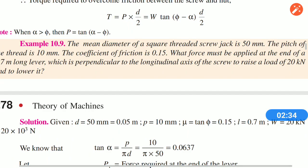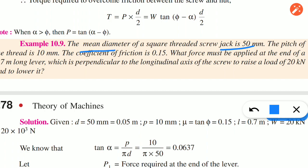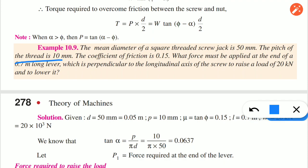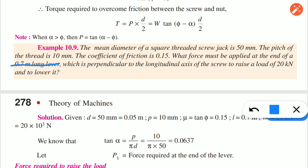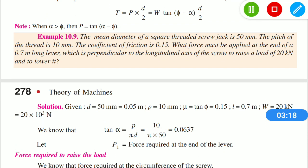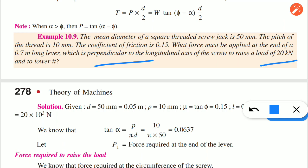The problem is: the mean diameter of a square-threaded screw jack is 50 mm. The pitch of the thread is 10 mm. The coefficient of friction mu is 0.15. What force must be applied at the end of a 0.7 m long lever, which is perpendicular to the lever, to raise the load of 20 kN and to lower the load?